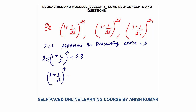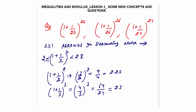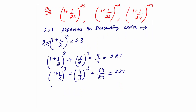Calculate (1+1/2)^2 = (3/2)^2 = 9/4 = 2.25. Then (1+1/3)^3 = (4/3)^3 = 64/27 ≈ 2.37. Then (1+1/4)^4 = (5/4)^4 = 1.25^4 ≈ 2.44. Observe the pattern: as we increase the number, the value increases.